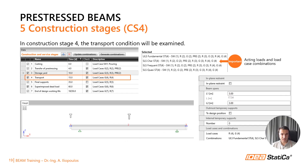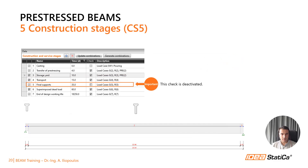The fourth construction stage refers to the transfer phase. Here we have to determine the static system and take into account the load cases and load combinations. In construction stage 5, the beam is finally in its definitive position. We can select which construction stages will be taken into account for the code check — for example, if we are sure that construction stage 5 won't be the governing one, we can switch the check off and it will be deactivated.